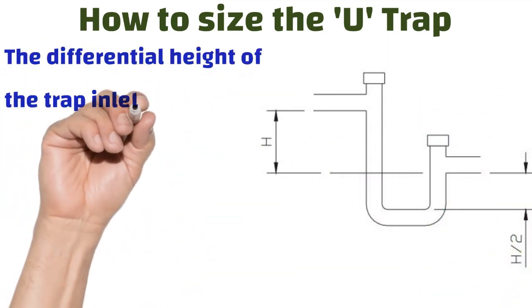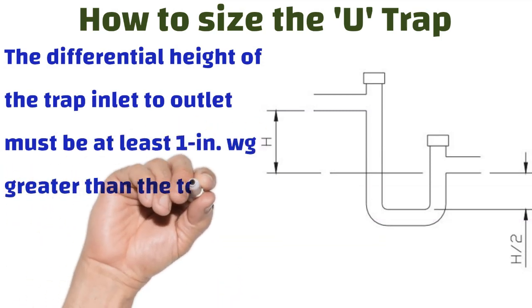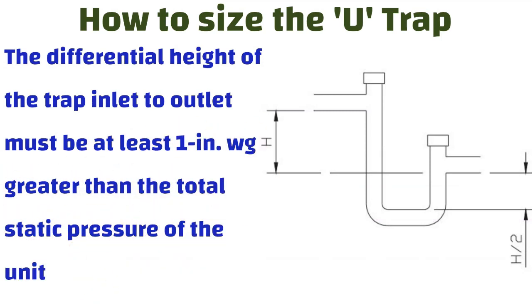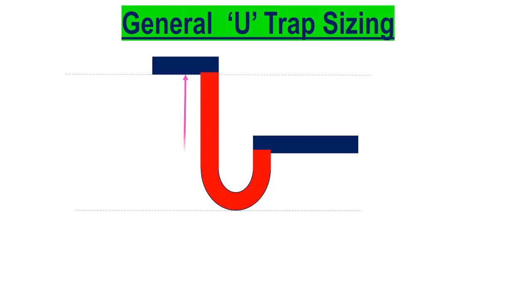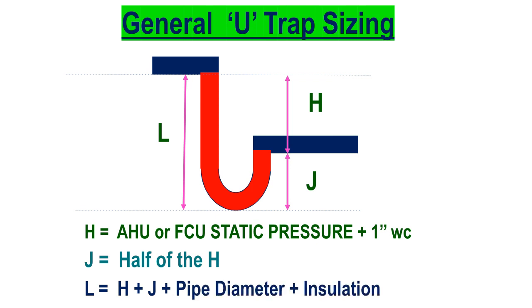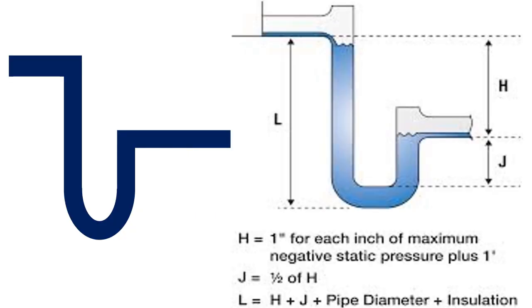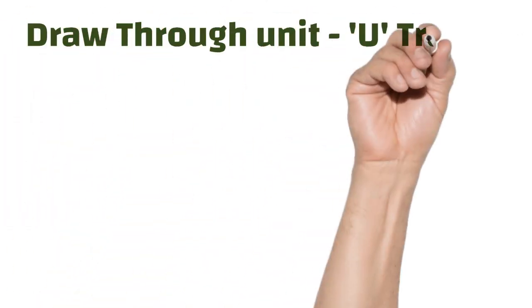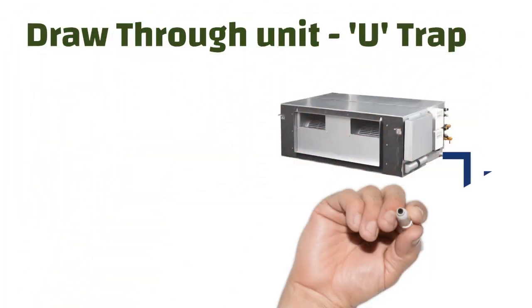How to size the U-trap: the differential height of the U-trap inlet to outlet must be at least one inch water gauge greater than the total static pressure of the unit. Here you can see the sizing of the U-trap. H is the distance between the upper and lower level of the U-trap — H equals the static pressure of the fan coil unit or AHU plus one inch water gauge. J is half of H, so the total height of the U-trap is J plus H.